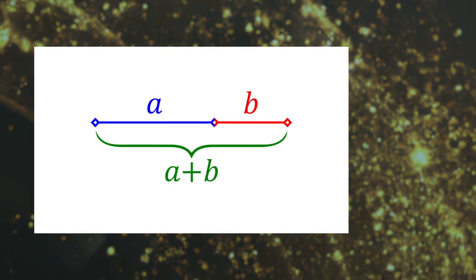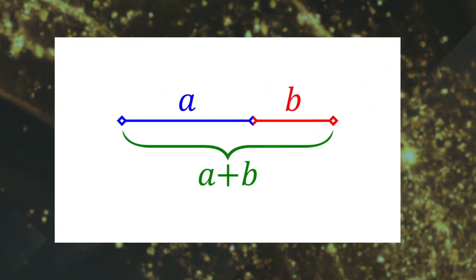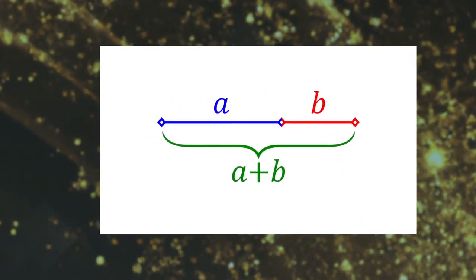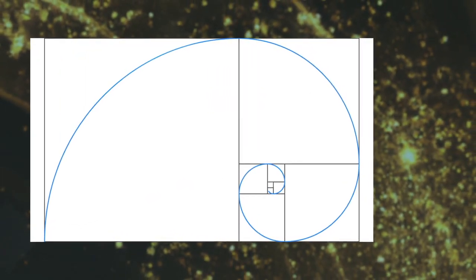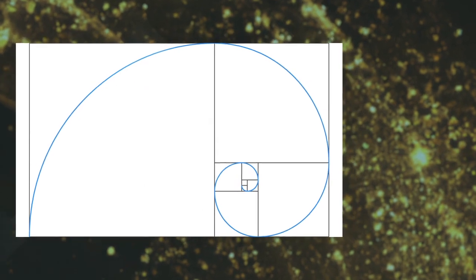You can find the golden ratio by dividing a line into two pieces in a specific place. If you create this line properly, you can use it to draw rectangles and then use the sides of these rectangles to draw a perfectly proportioned spiral.